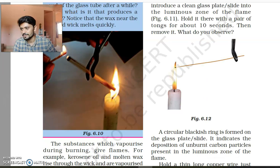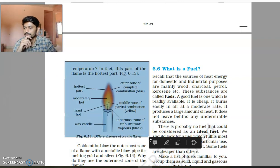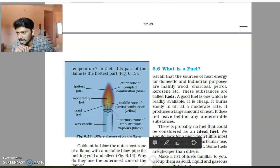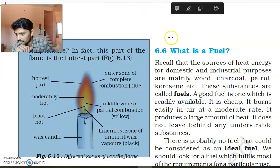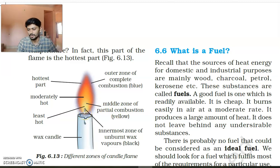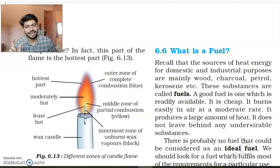The flame can be structured into zones. Looking carefully at the structure of a candle flame, you will observe that the innermost part is yellow in color. This is because there is an unburnt portion of wax present in this innermost zone.